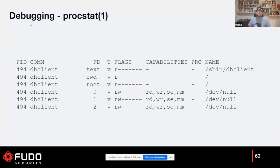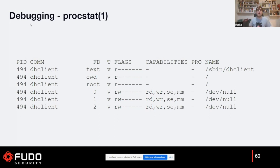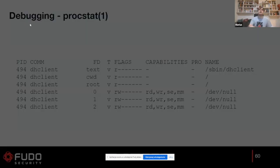Another interesting tool during sandboxing is procstat. If we call procstat with the -f option, it shows all descriptors opened by the process, and we can see what capabilities are set on those descriptors. Here we're investigating dhclient, which is already capsicumized. We can see it has only three descriptors for standard input, output, and error — all redirected to /dev/null — and the capabilities set on those descriptors are read, write, and some others.